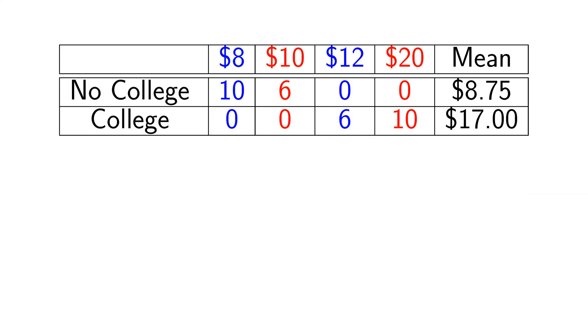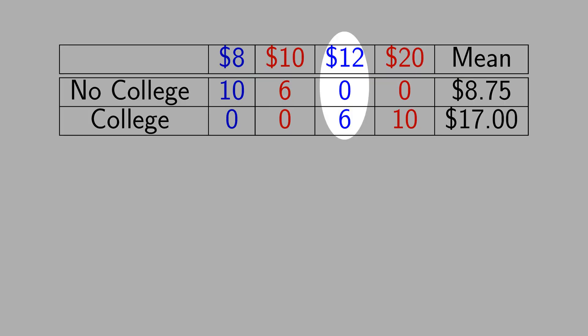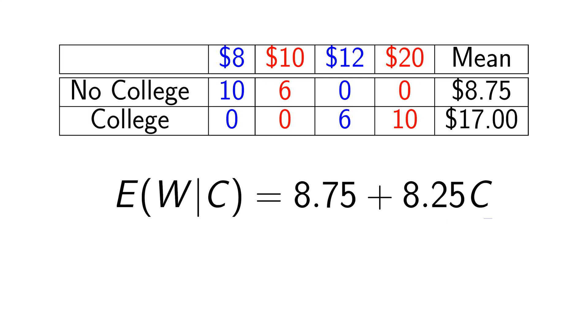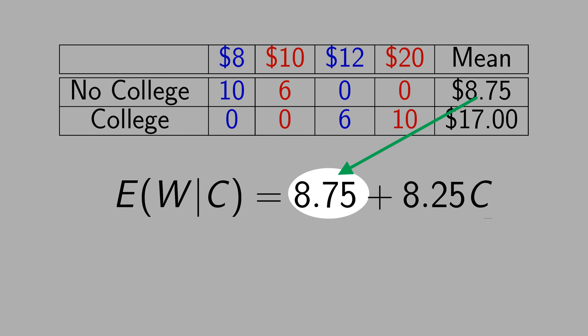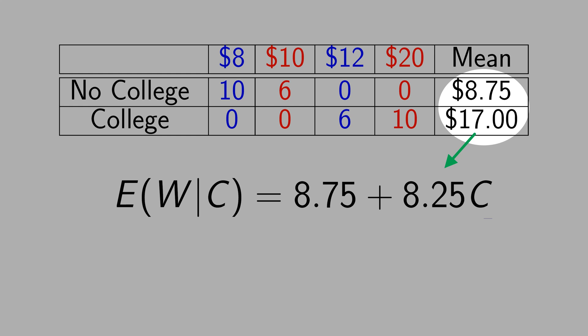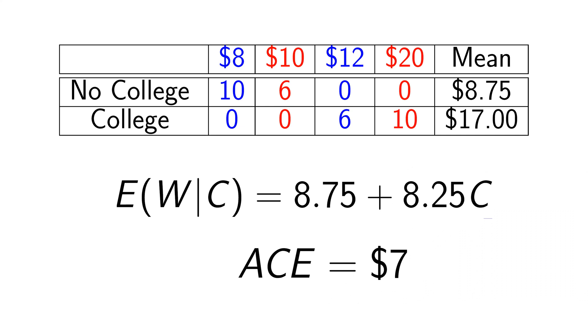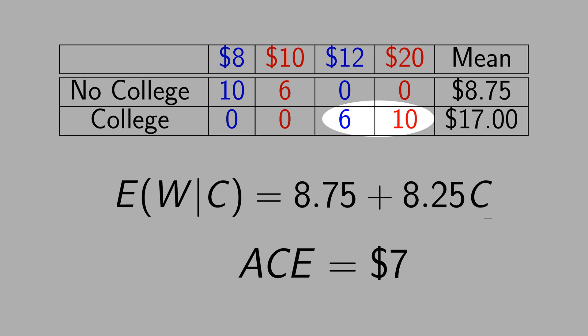Now let's see the data of people with a college degree. 6 blue people make $12, and 10 red people make $20. The mean salary of people with a college degree is $17. If you run ordinary least squares, you get this result. The intercept is $8.75, the mean salary of people without a college degree, and the 8.25 is the impact of college degree — just the difference between 17 minus 8.75. The problem is that OLS overestimates the impact of college. Remember, the average causal effect is $7.